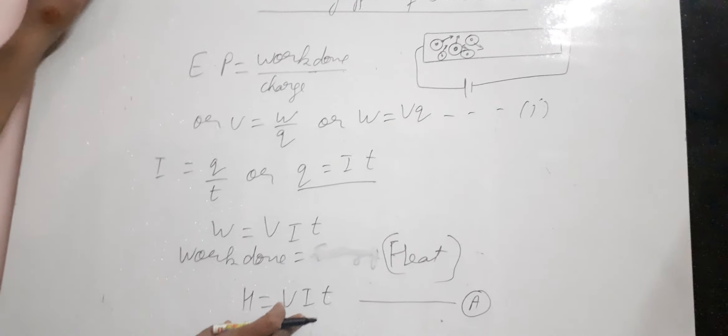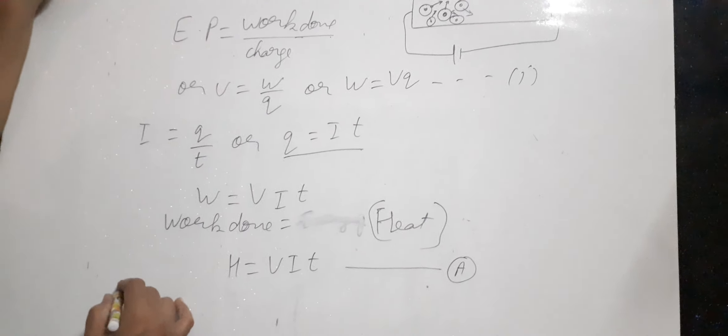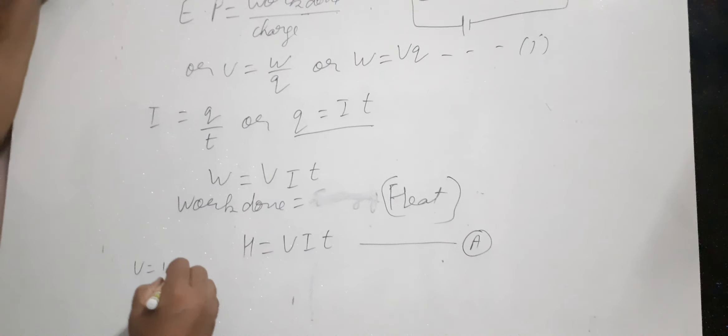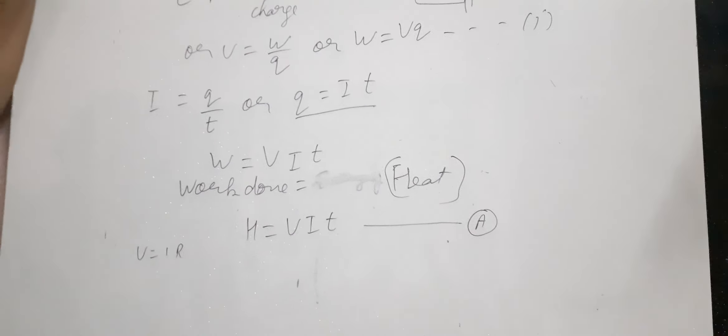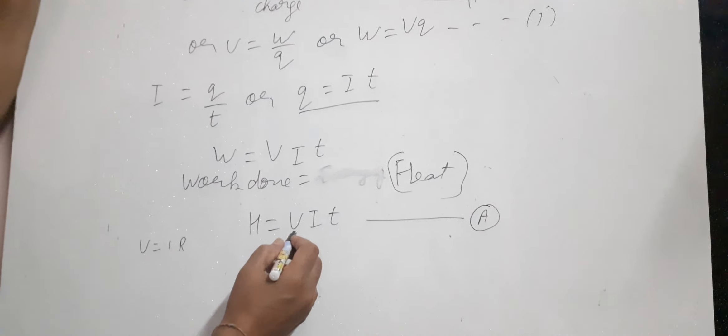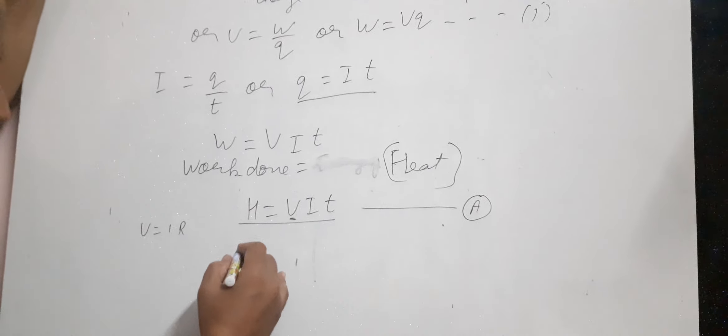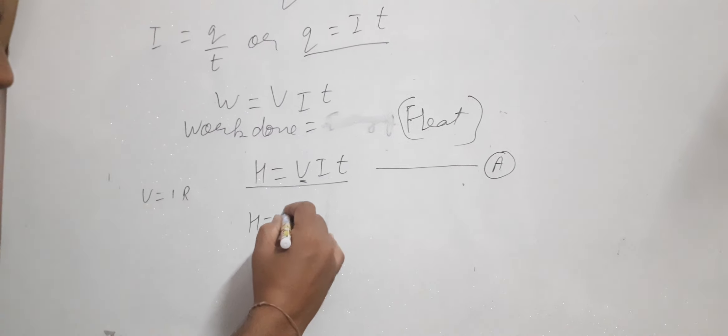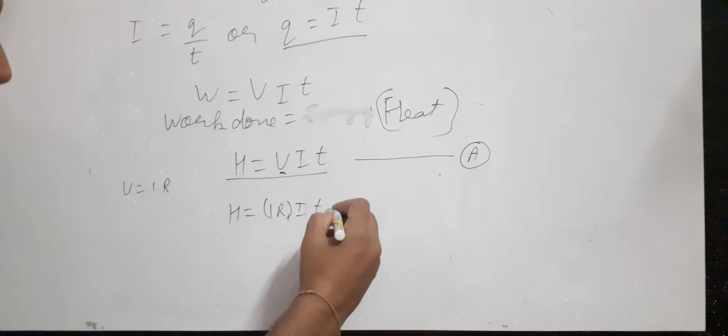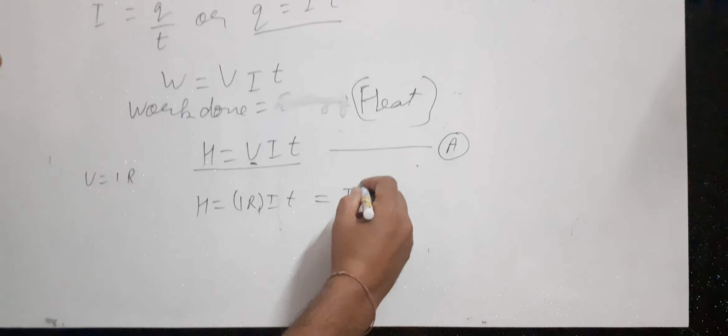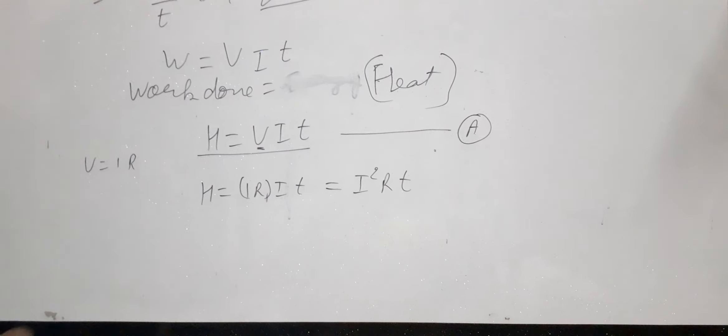By substituting the value of V from Ohm's law, you know that V = IR. So by substituting V with IR in this equation, you get H = IR × I × T, which equals I² × R × T.